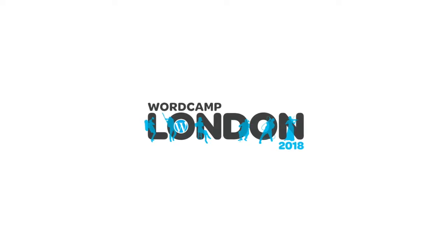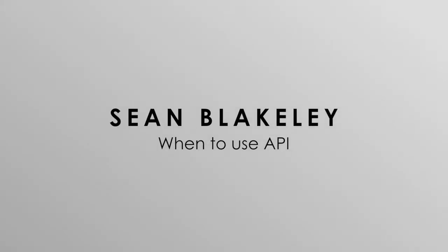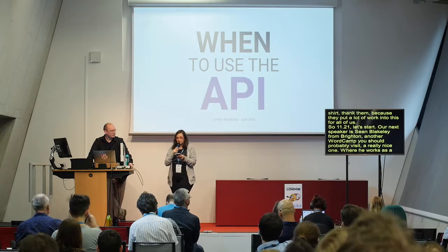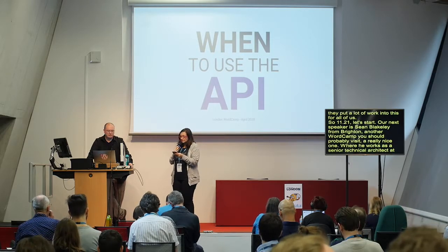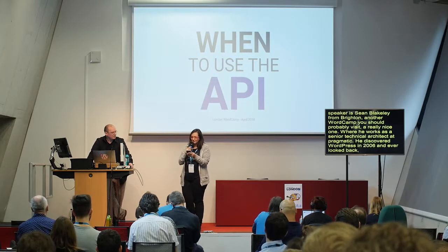Our next speaker is Sean Blakely. He comes from Brighton, another WordCamp that you should probably visit — it's a really nice one. He works as a senior technical architect at Pragmatic, which is a leading agency here in the UK based in Brighton. He discovered WordPress back in 2006 and never looked back. He also worked in the film industry as a sculptor — for blockbuster movies you've probably seen. Today he's going to talk about use cases for the REST API. Please give a warm welcome to Sean.